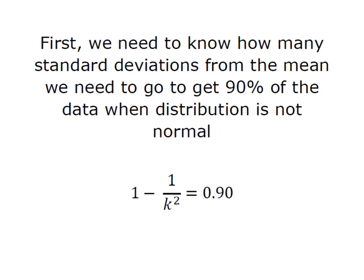The key to solving this is we need to know how many standard deviations, i.e. k, from the mean do we need to go in order to get 90% of the data captured when distribution is not normal. And so what we're going to do is we're going to take Chebyshev's theorem here, and we're going to set it equal to the 90%. And then we're going to solve for k, or the number of standard deviations I need to move in order to include 90% of the population.